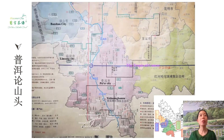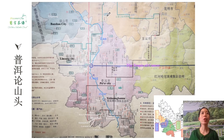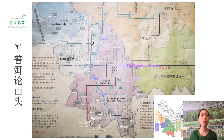Pu'er city has the largest area of the four regions. Here is a map of the four main regions. Although there are small tea plantations in places like Dehong, Dali, Honghezhou, and Yunyishi, the four main regions are Baoshan, Lincang, Pu'er, and Xishuangbanna.